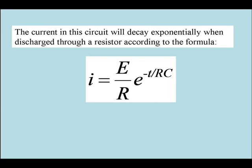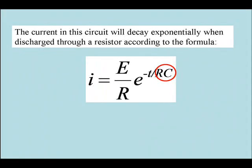Notice the exponent is T over RC. It is extremely easy and common to evaluate the exponent incorrectly. It is important to note that the denominator of the exponent is R times C. The denominator is not just R by itself.